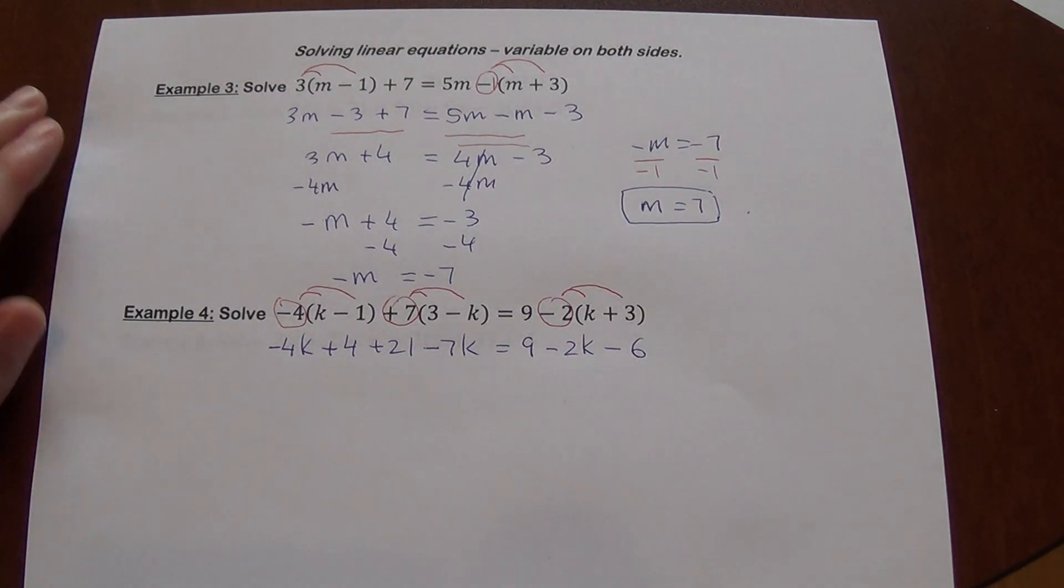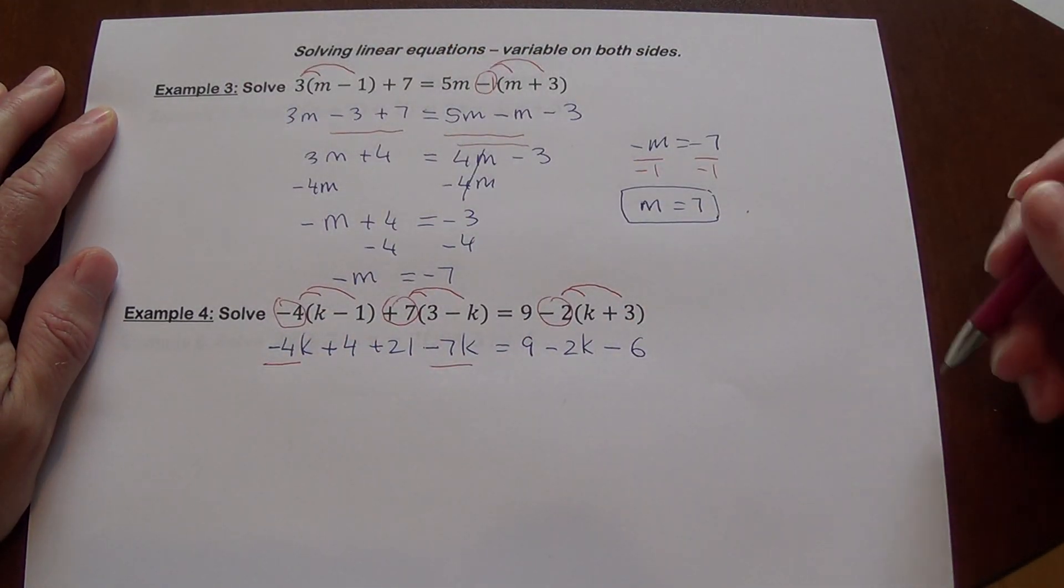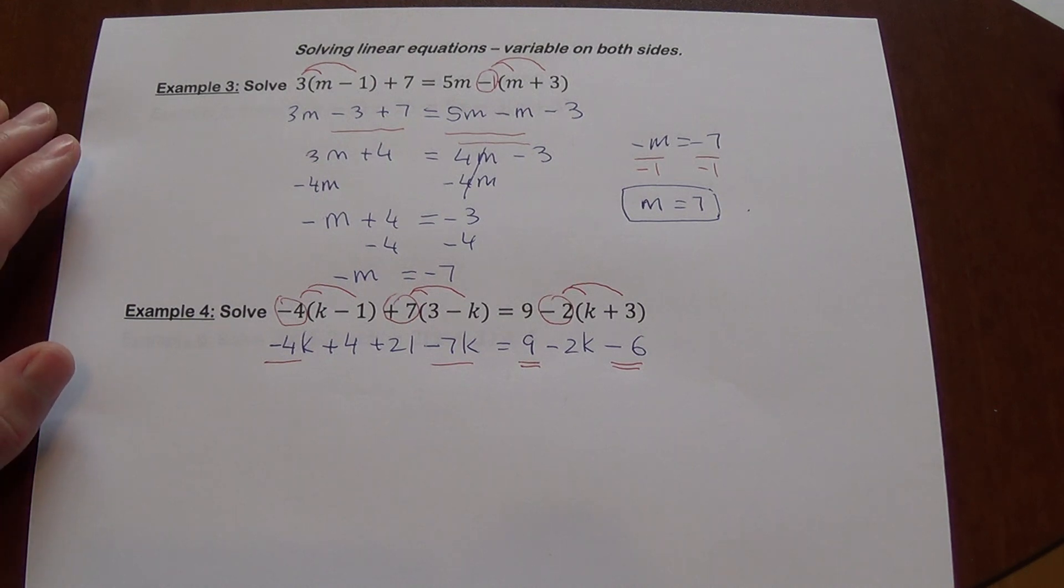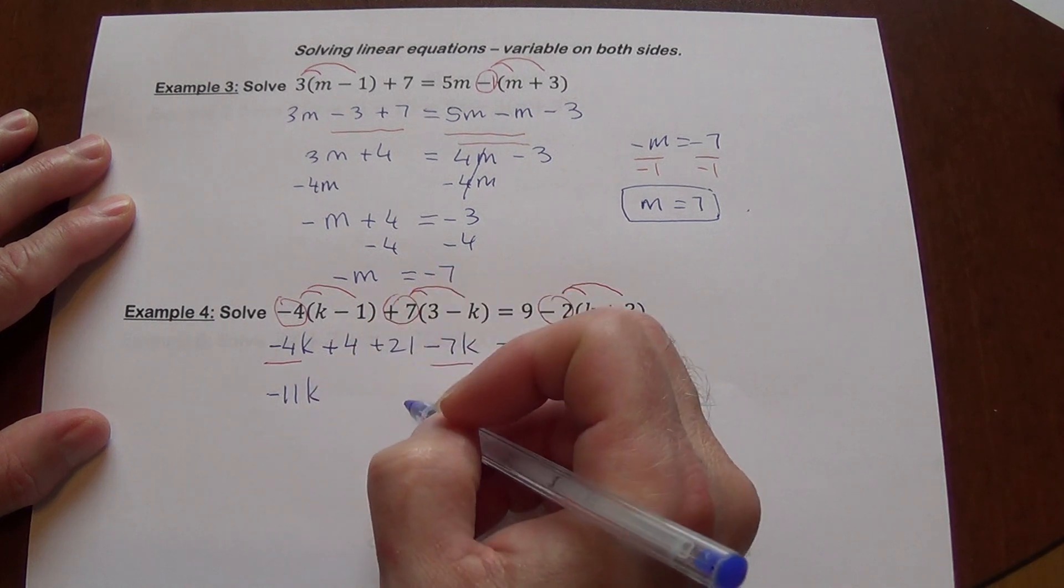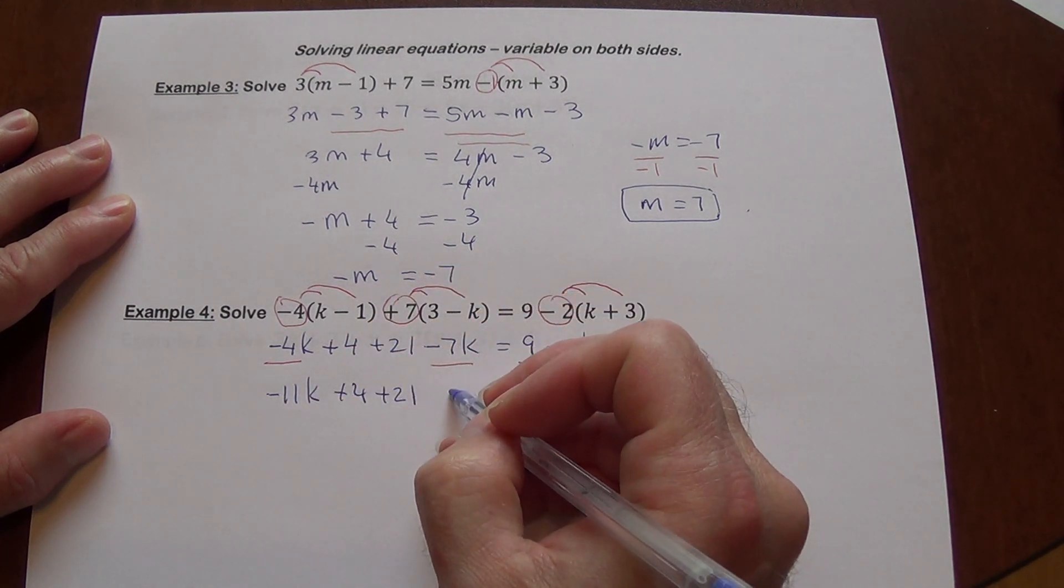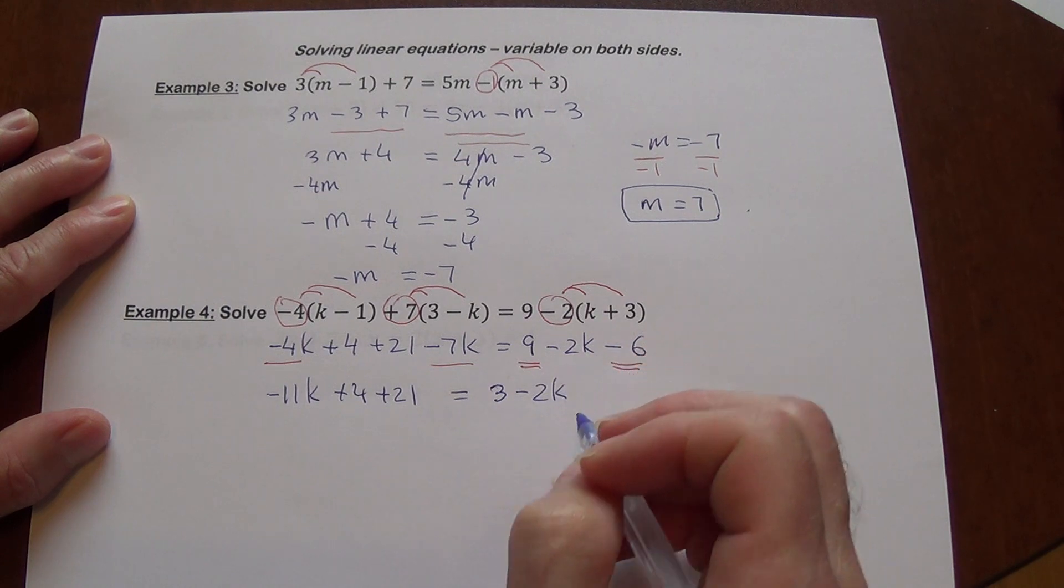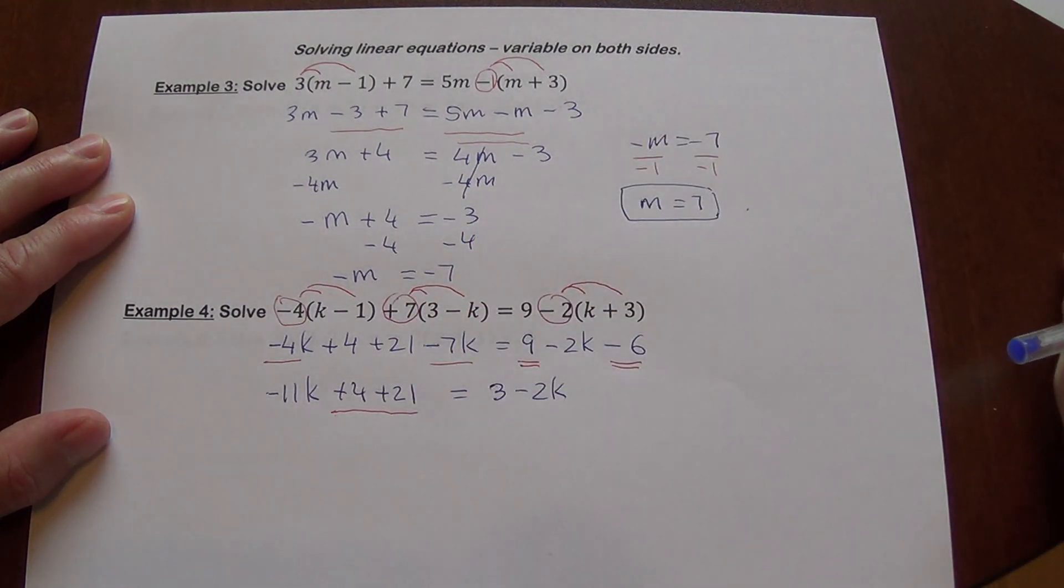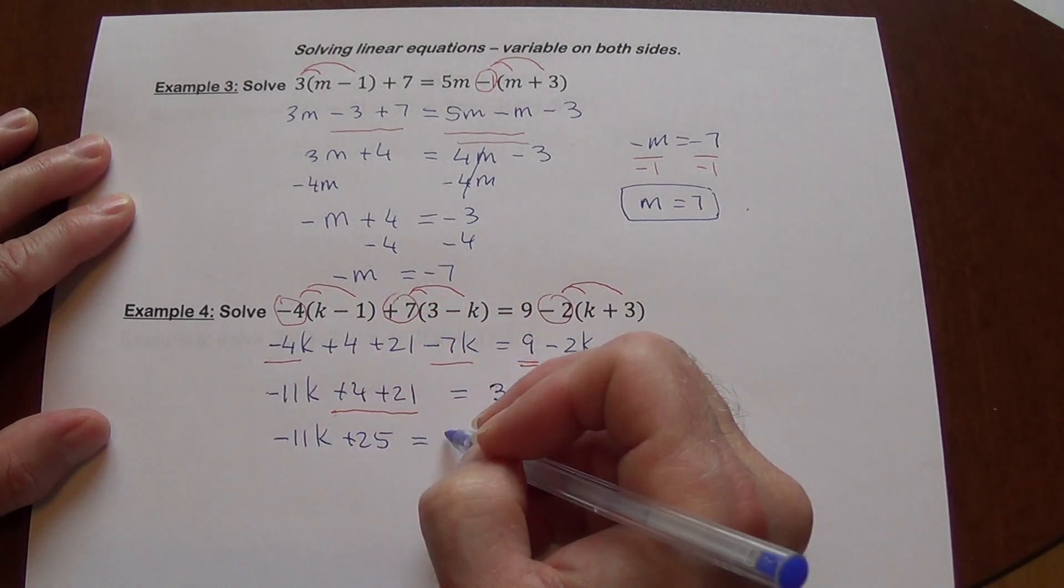Now we are going to have to look for like terms. It's a little busy here. So we have here negative 4 and negative 7k, let's take care of that first. And on this side we have 9 minus 6. Sometimes your terms may be separated by another term, you still can combine them, just be careful with the signs. So it's negative 4k minus 7k will give you negative 11k plus 4 plus 21. And on this side we have 9 minus 6, 9 minus 6 is 3, minus 2k. We have another pair of like terms here, plus 4 plus 21, which will give you 25. So negative 11k plus 25 equals 3 minus 2k.